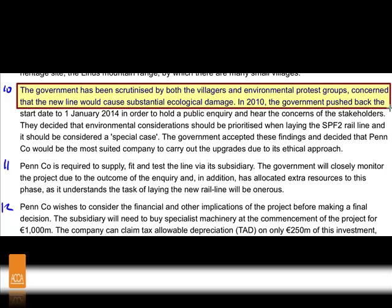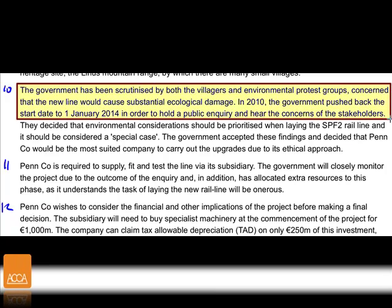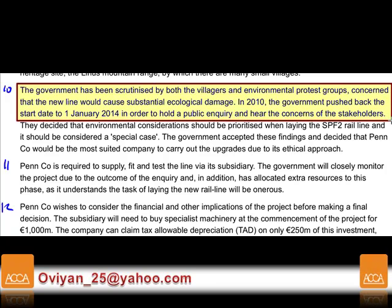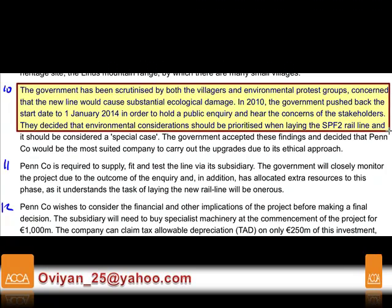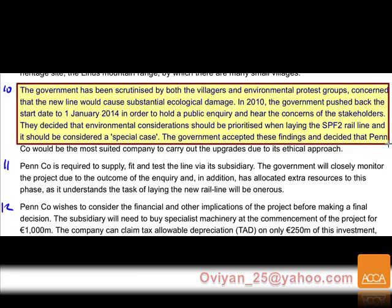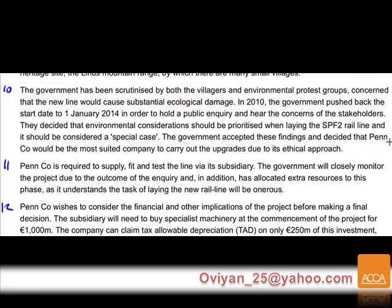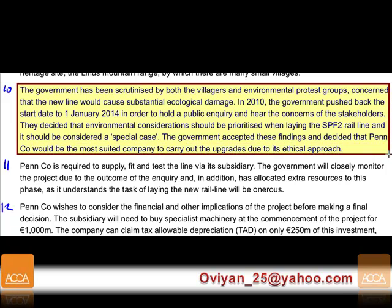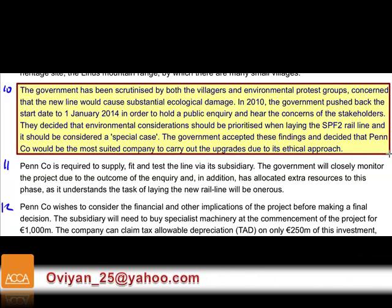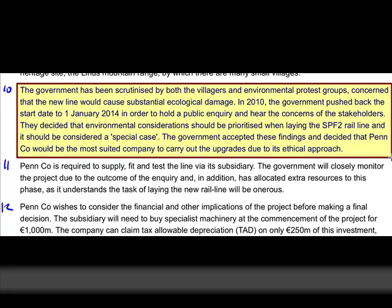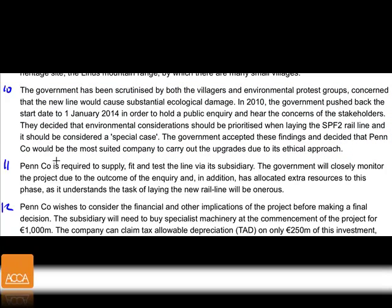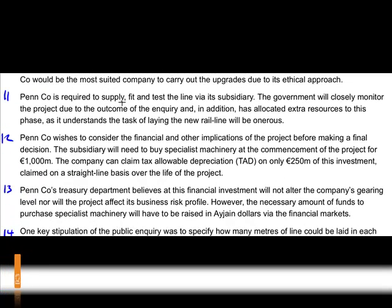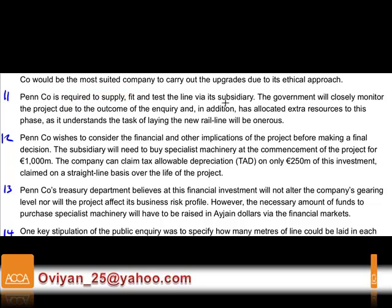The government held a public inquiry to hear stakeholder concerns, deciding that environmental considerations should be prioritised when laying the SPF2 rail line, treating it as a special case. The government accepted the findings and determined that Penn was the best company to carry out the upgrade works due to its ethical approach.